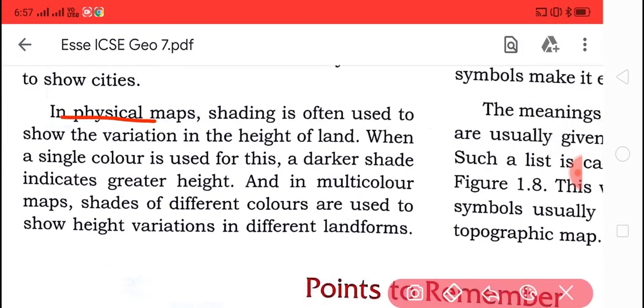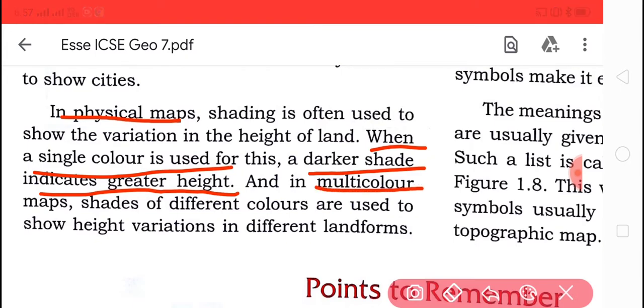In physical maps, shading is often used to show the variation of the height of the land. When a single color is used for this, the darker shade indicates the greater height. In multicolor maps, shades of different colors are used to show the height and the variation of the different landforms.